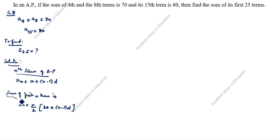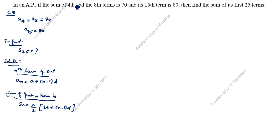Don't confuse these two formulas. Here it is given as sum of 4th term and 8th term, so we will use A4 plus A8 — that is the nth term formula. For the first 25 terms, since it says sum, we will use the sum formula.